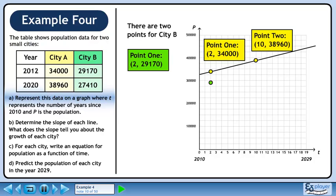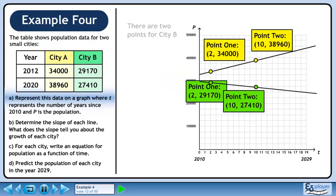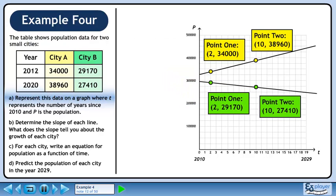Point 1 at 2, 29,170. Point 2 at 10, 27,410. We have plotted both points so we can draw the line for city B.